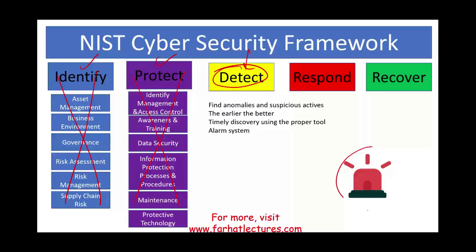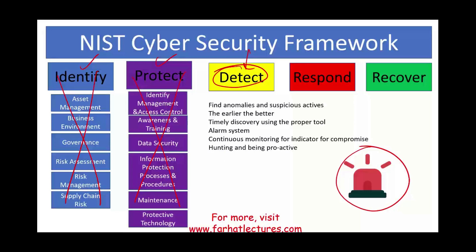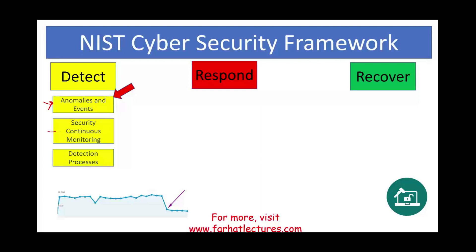Someone is inside the system, and you want to continuously monitor for indicators of compromise. If someone is penetrating your system, you want to be on the lookout — you are hunting and being proactive. This is what the detect function is. It has three categories: anomalies and events, security continuous monitoring, and detection processes.